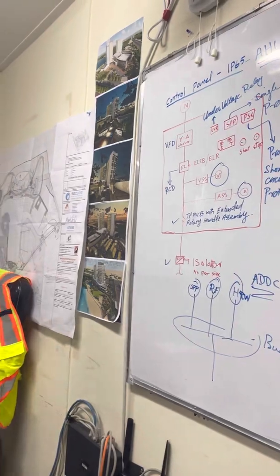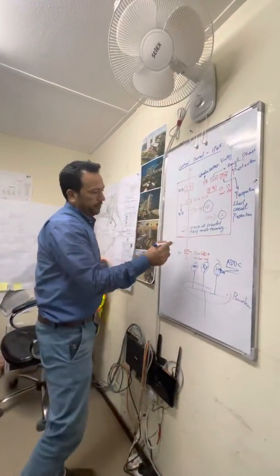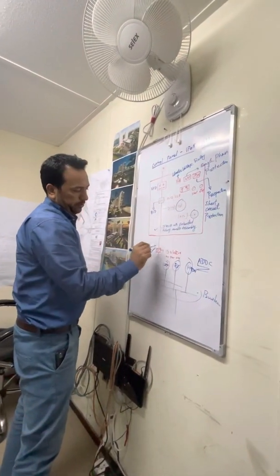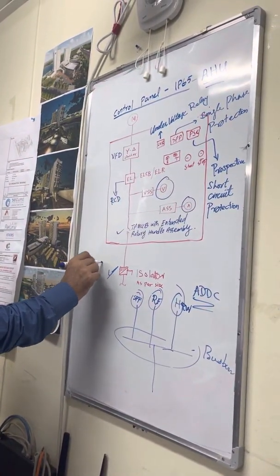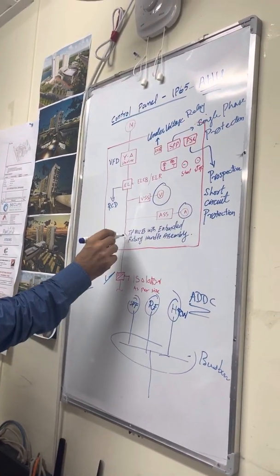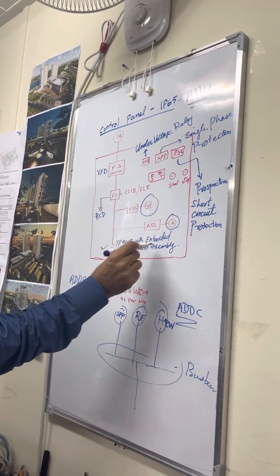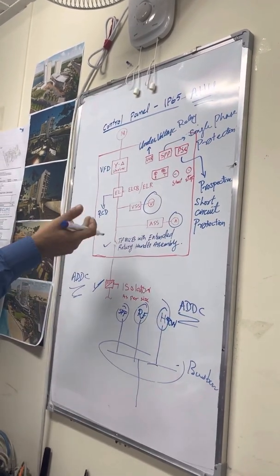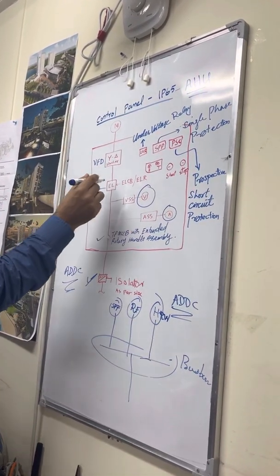The control panel - Isolator, this is the most important. As per ADDC, Isolators are required. Then inside there is MCCB. It should be Rotary Drive and without Rotary Drive.